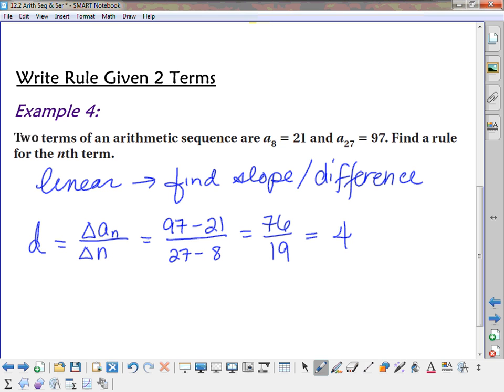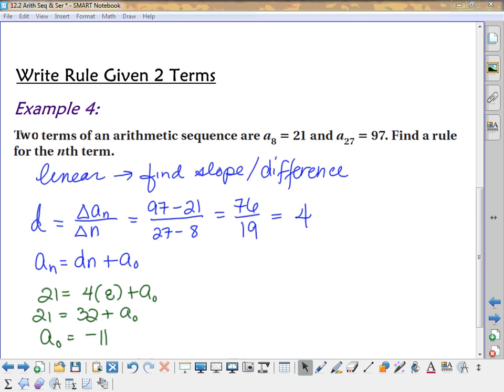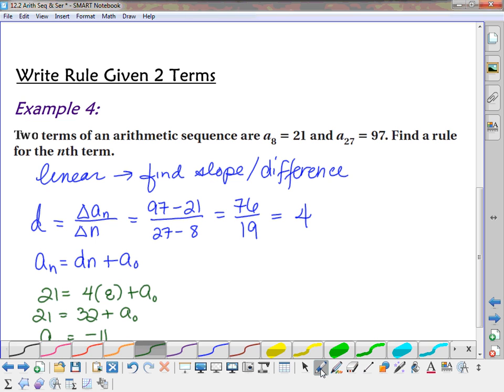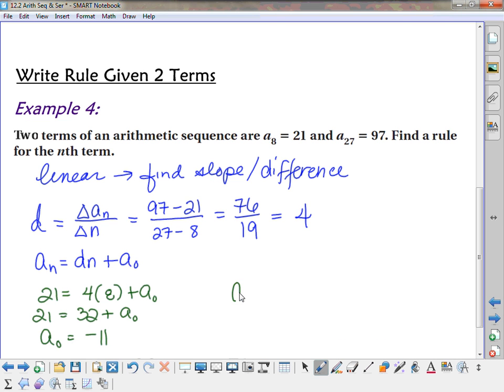And does it matter if I use a sub 8 or a sub 27? No, I can use either one. So, why don't you guys continue on from here, since you already know how to do that, and find the rule. So, what did you guys end up with? A sub n equals what? 4n minus 11. That's right.